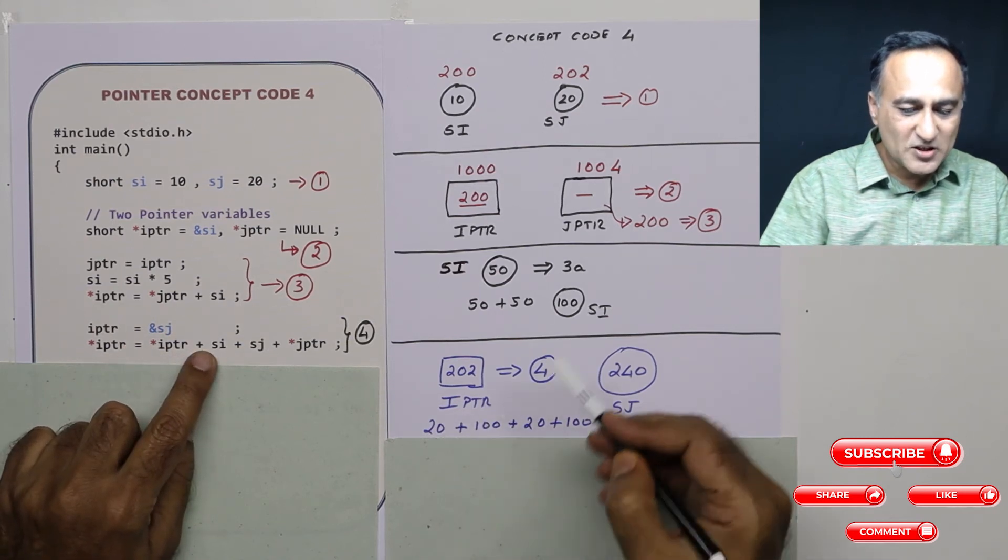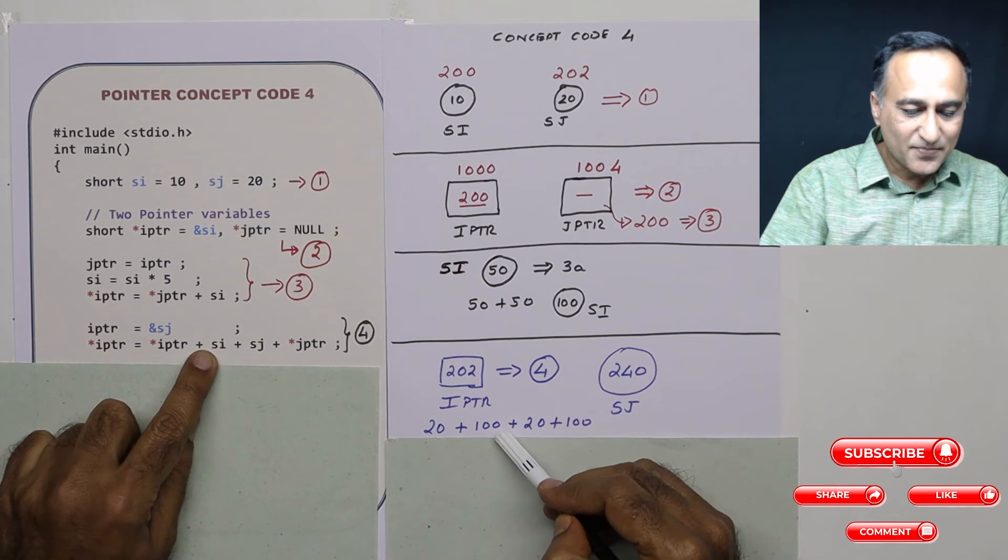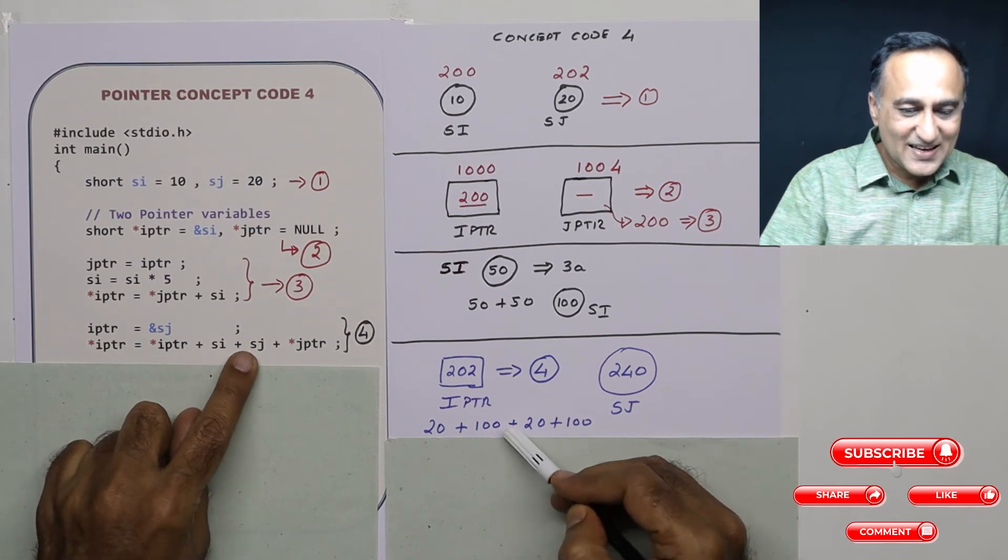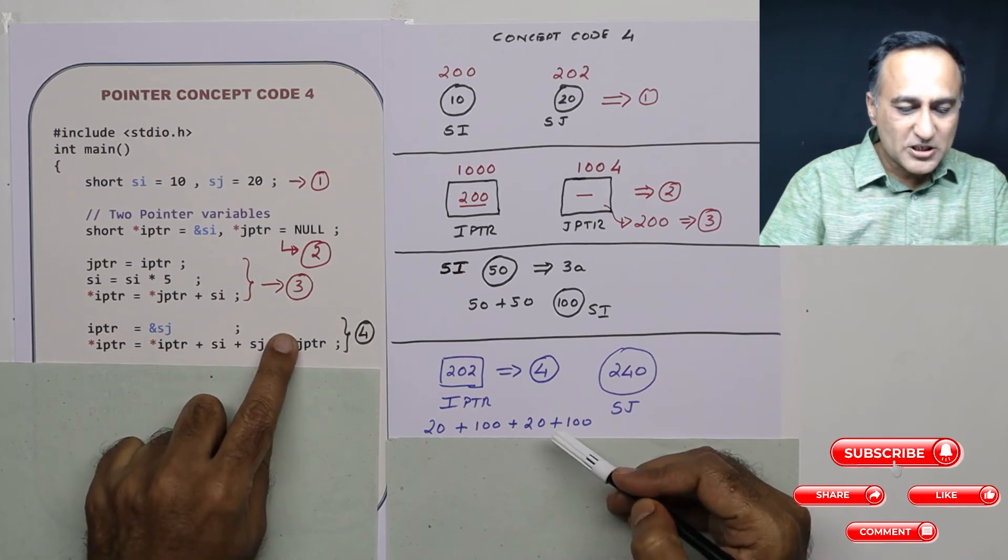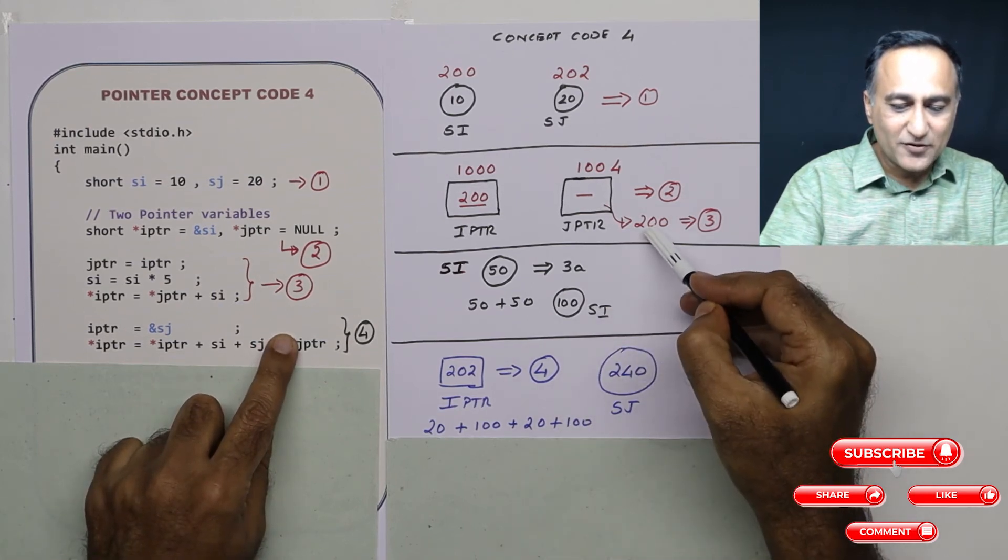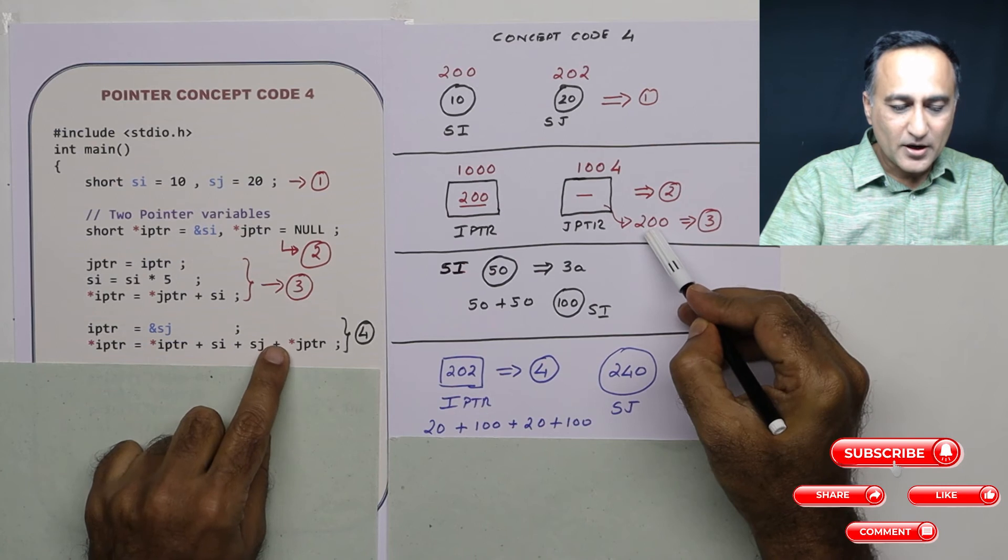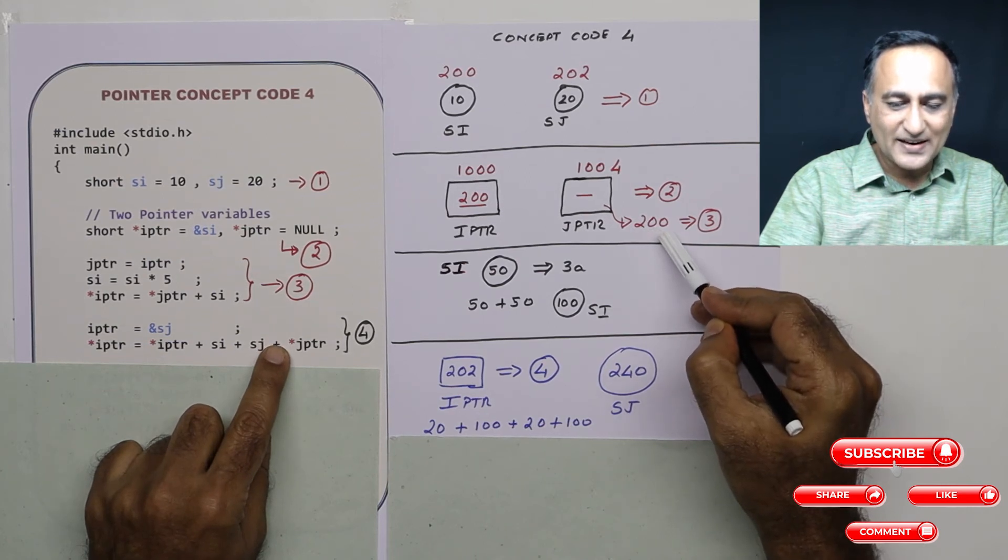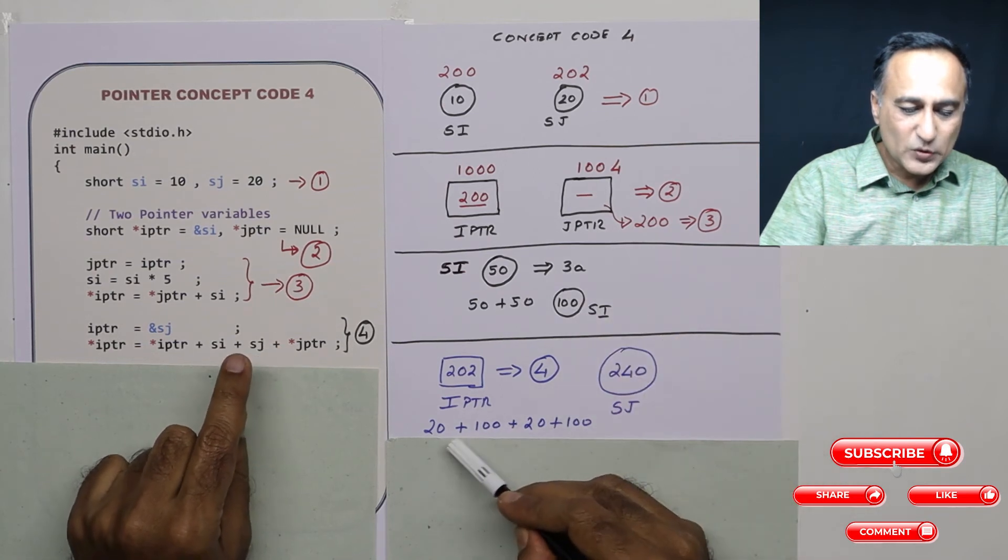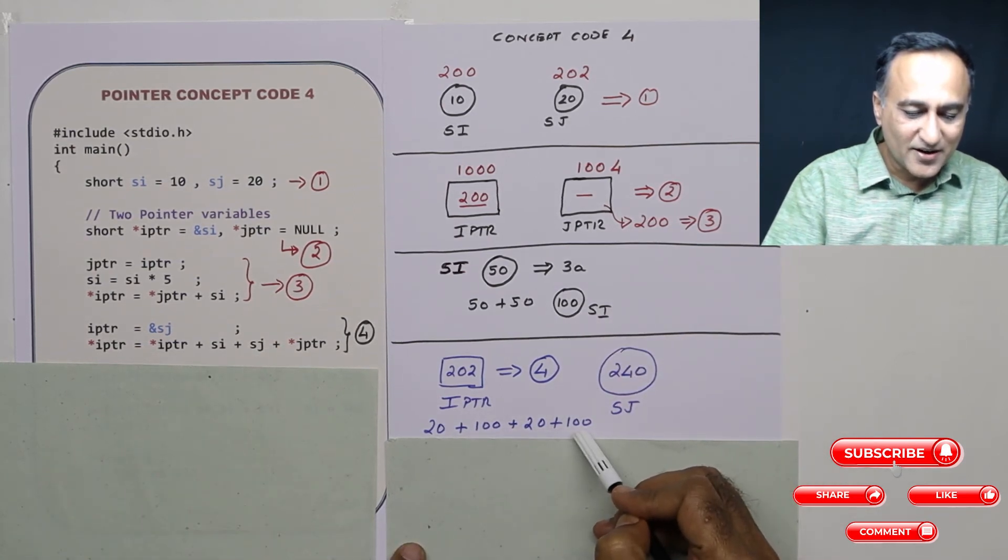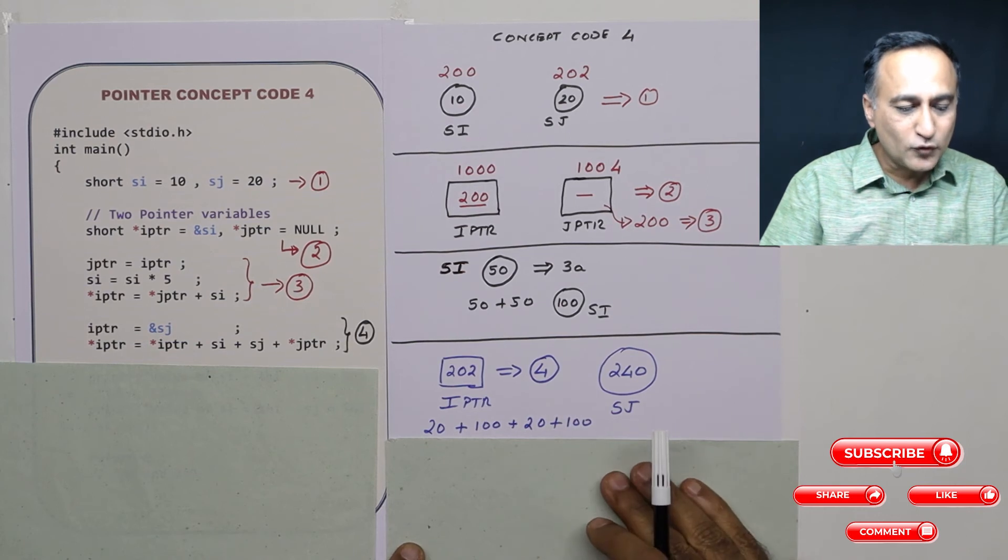SI is how much? 100. So this is 100. Now what about SJ? SJ is 20. So you are adding 20. What about JPTR? JPTR is referring to address 200. What is the value or content at address 200? It is 100. So it is 20 plus 100 plus 20 plus 100. So this should be equal to 240.